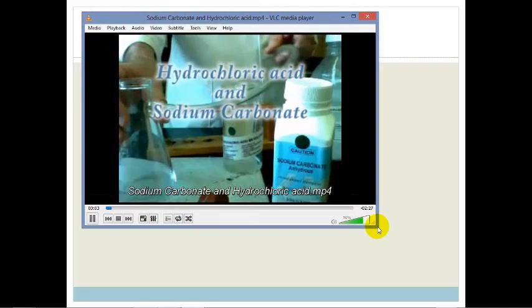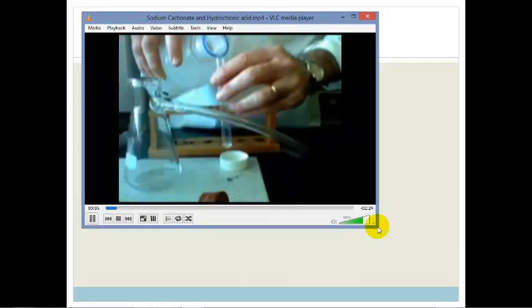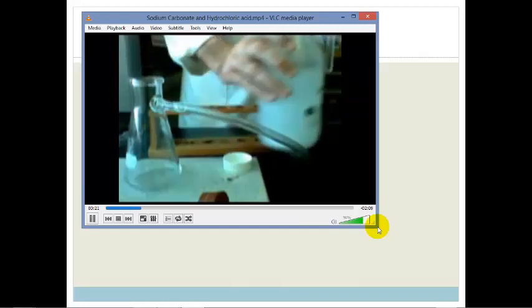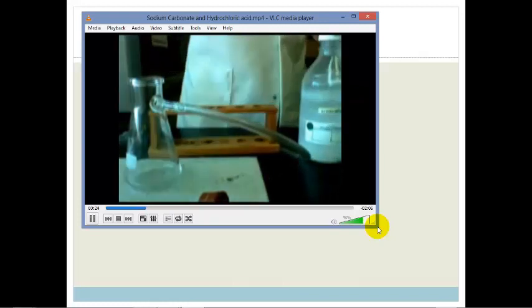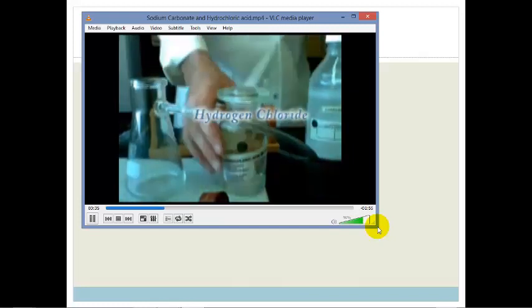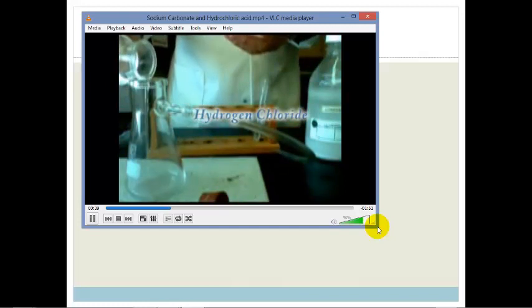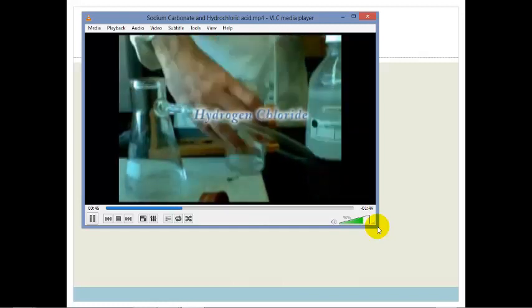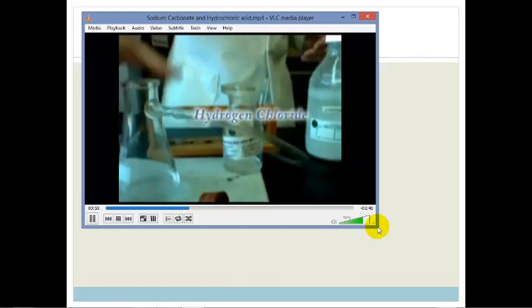We're investigating the reaction between sodium carbonate and hydrochloric acid. Lime water is used to test whether the gas given off is carbon dioxide from the reaction. Lime water turns cloudy in the presence of carbon dioxide. Hydrochloric acid is the common name for hydrogen chloride. The acid is added to the conical flask first of all.